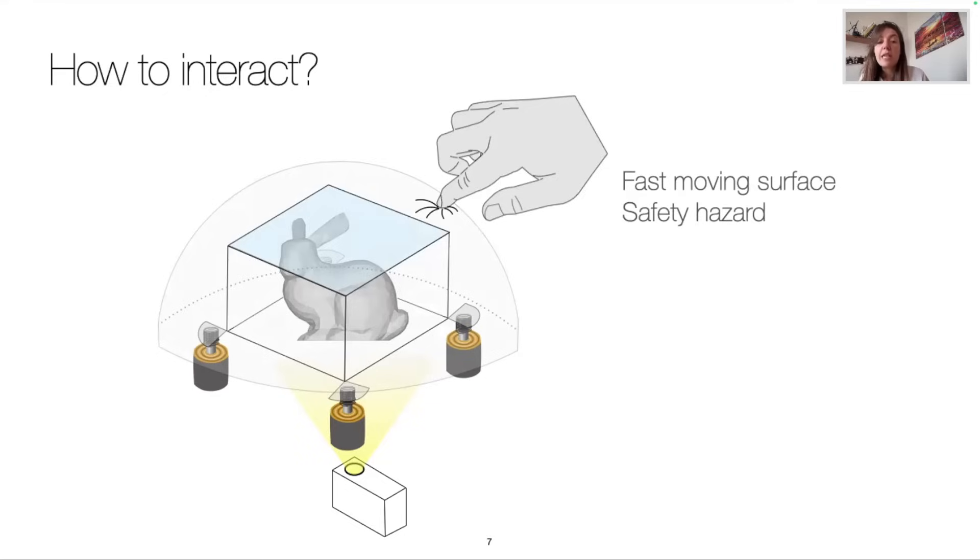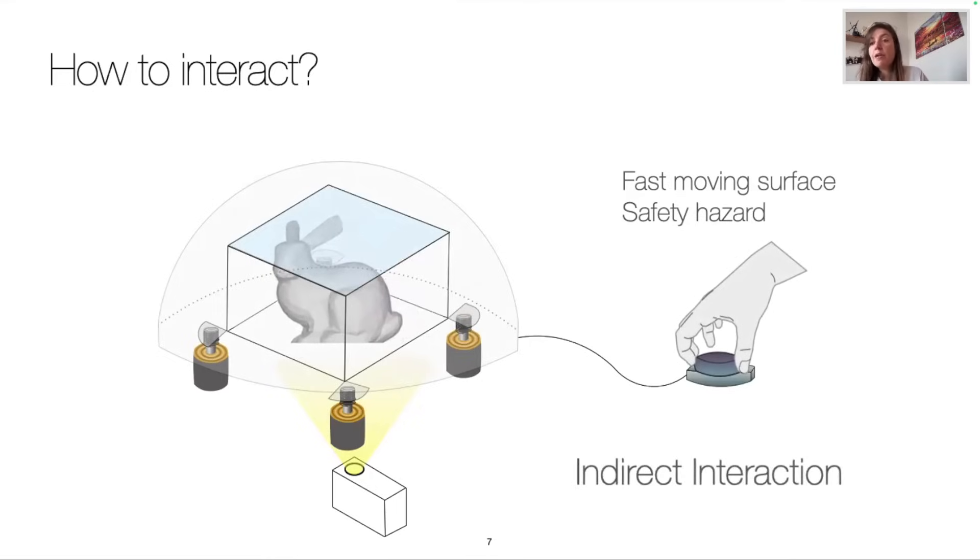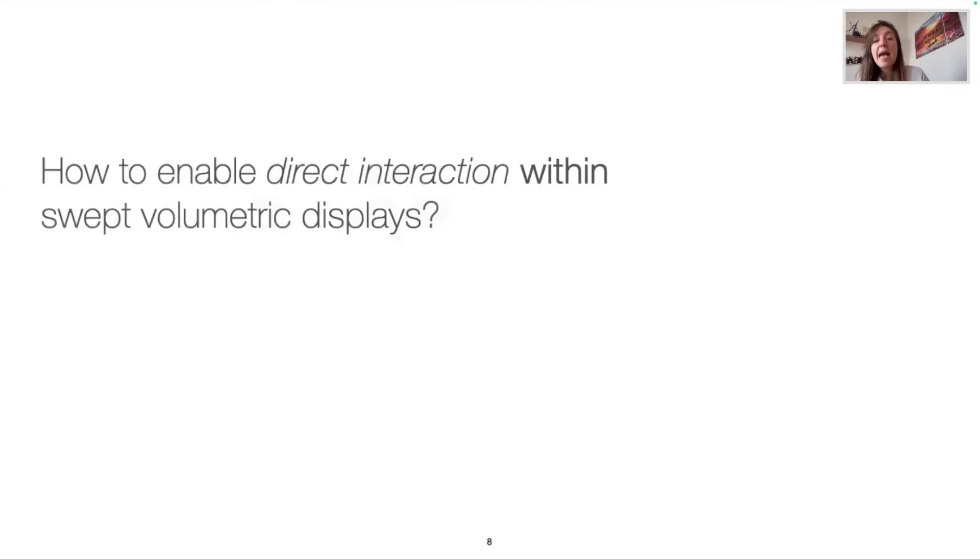The interaction can then be by pointing into the volume, or by tracking the hands with a camera and replicating the movement into the volume with an avatar, or more classically through a 3D mouse. So basically everything we can do consists in indirect interaction.